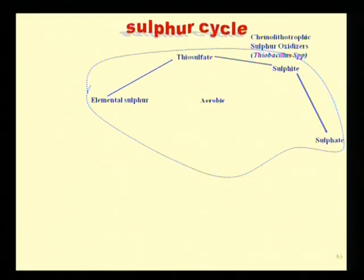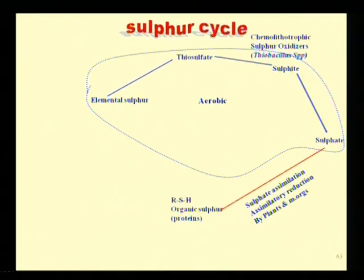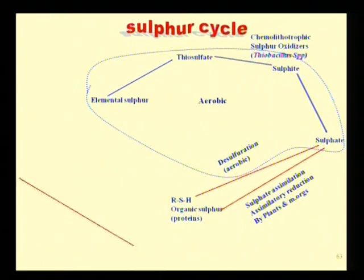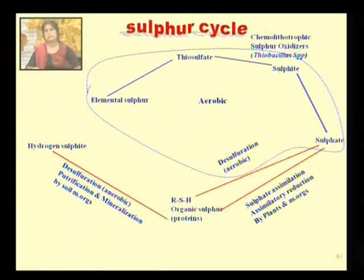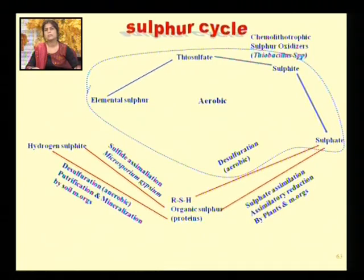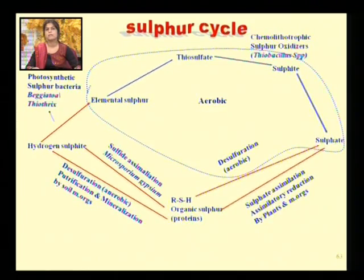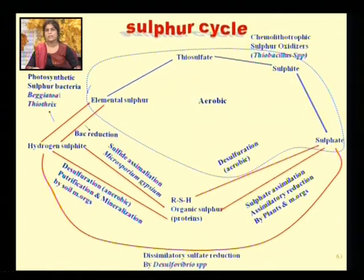Sulfate is assimilated in the form of proteins. These proteins undergo desulfuration under both aerobic and anaerobic conditions. Under aerobic conditions, sulfate is reformed; under anaerobic conditions, H2S is formed. H2S can again undergo sulfate assimilation to form proteins. Additionally, hydrogen sulfide reduces to form elemental sulfur, and elemental sulfur can reform hydrogen sulfide. Sulfate is also often converted to H2S in a process known as dissimilatory sulfate reduction.